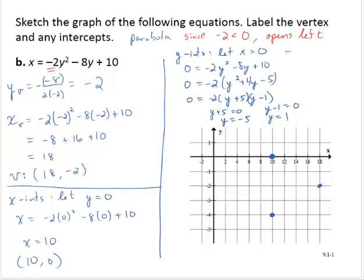So my y-intercepts then are 0, negative 5, and 0, 1. Plotting those points, 0, negative 5, 0, 1. Then we see the shape of a parabola. It does appear to be opening left, so we'll draw that curve.